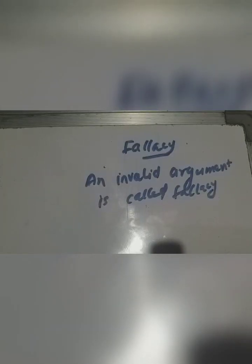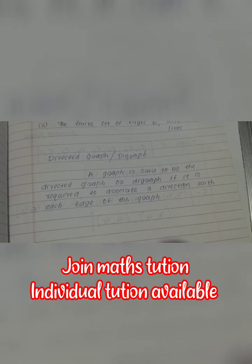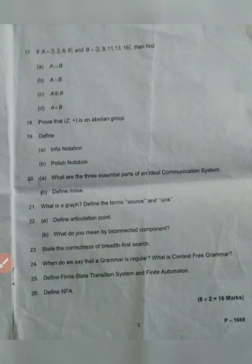Fallacy: an invalid argument is called a fallacy. This is the directed graph, the directed graph is said to be the answer for the second question.